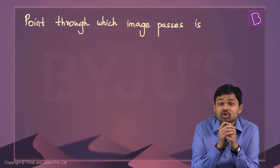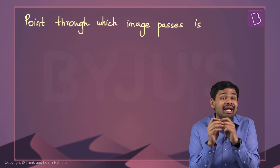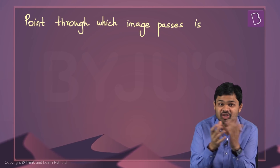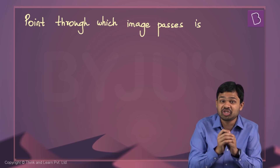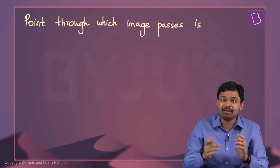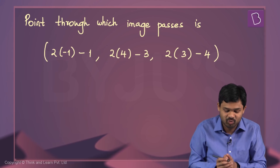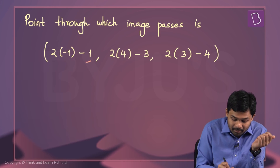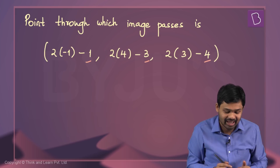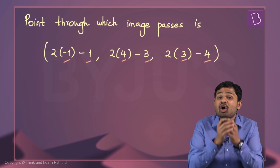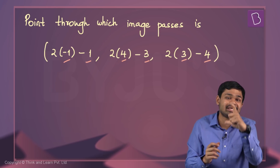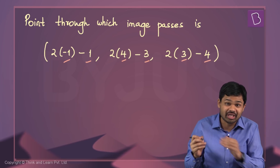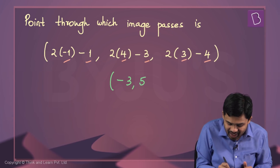The point through which the image line passes can now be computed since we know the midpoint. Using the midpoint formula: the image point is (2×(−1) − 1, 2×4 − 3, 2×3 − 4), where (1, 3, 4) is the point on the given line and (−1, 4, 3) is the midpoint. This gives the coordinates of the point through which the image line passes as (−3, 5, 2).